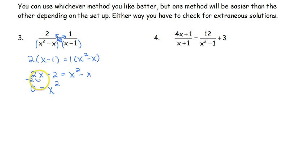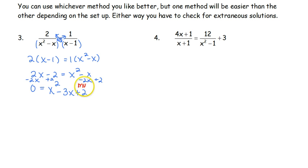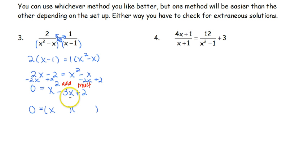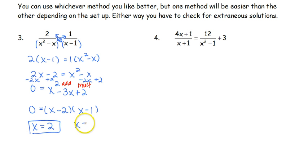To factor we use the zero product property, which means we need it set equal to 0. Moving 2x over makes it negative 2x, giving us negative 3x. Adding the 2 gives us x squared minus 3x plus 2 equals 0. For regular factoring — multiplying the outside and adding to the middle — two numbers that multiply to positive 2 and add to negative 3 are negative 2 and negative 1.